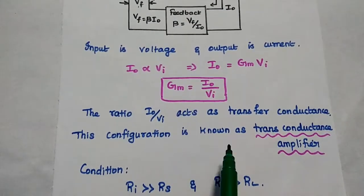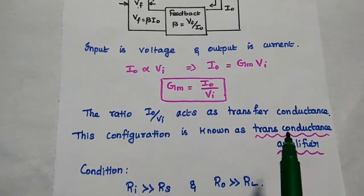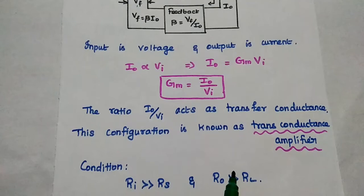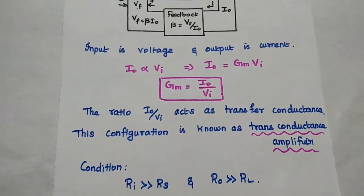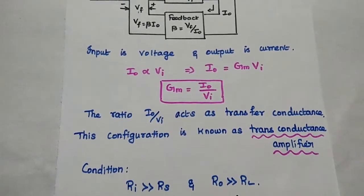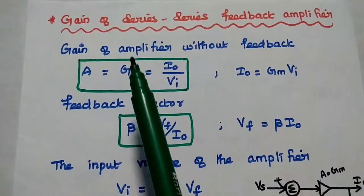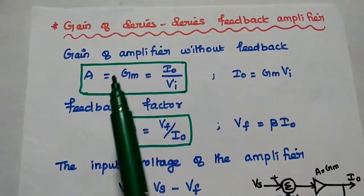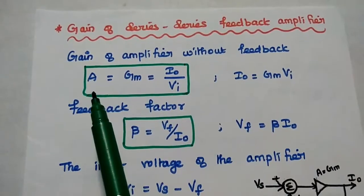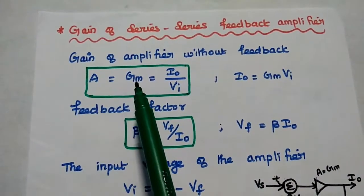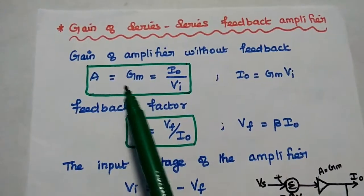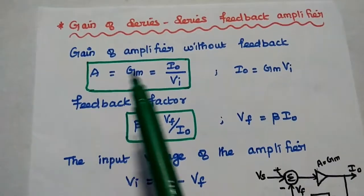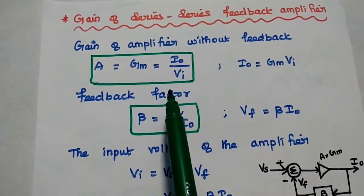You have to remember this: the series-series feedback amplifier is also known as transconductance amplifier. For this transconductance amplifier, the input impedance should be high and output impedance should also be high. Next, we are going to analyze the gain of series-series feedback amplifier. Gain of amplifier without feedback is given as A, that is nothing but Gm — transfer conductance or transconductance — that is equal to output current by input voltage.